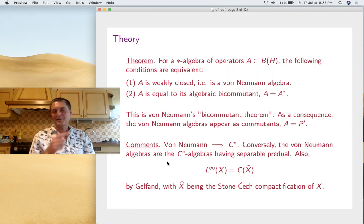So as an interesting consequence, since commutants are equal to their double commutants, the Von Neumann Algebras, alternatively, just appear as commutants. This is very important in relation with physics, where many things appear as commutants.